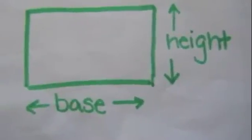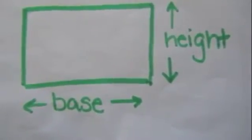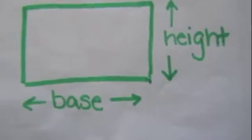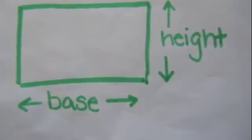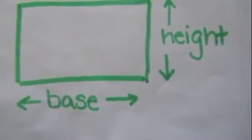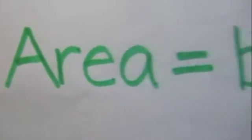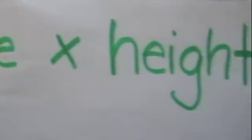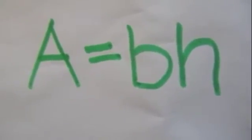All rectangles and squares have a base and they have a height. The base is the part that goes along the bottom of the shape. And the height is how tall the shape is. If the base and the height are the same, then the object would be a square. But if they're different, then it's a rectangle. To find the area of a rectangle or a square, we're going to use the formula that area equals base times height.